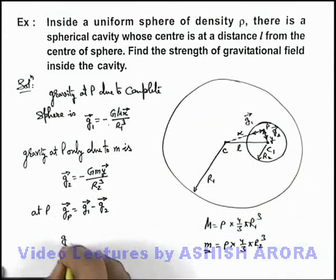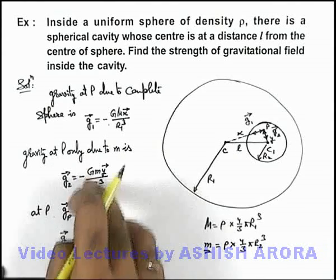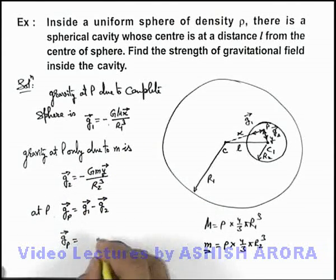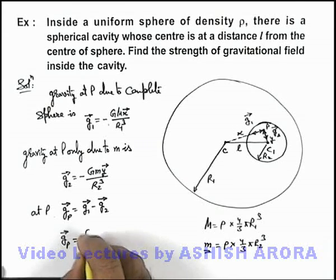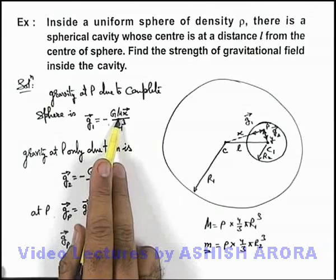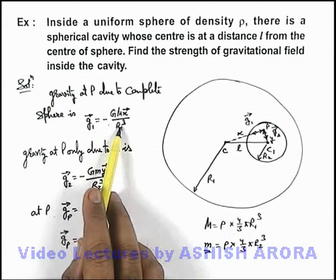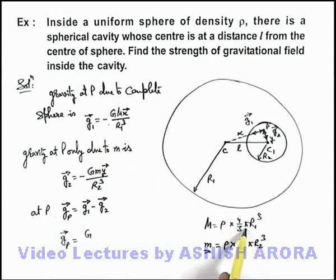So if we substitute the values, g at point P can be written as: if we substitute g₁ and g₂, this will give us G, and if we substitute the masses, we can write capital M as 4/3 π r₁³ ρ, so here r₁³ gets cancelled out, it'll be 4/3 ρ.